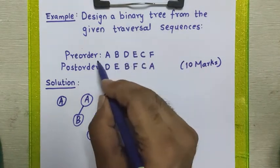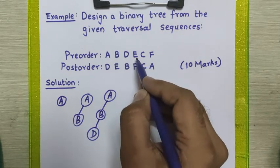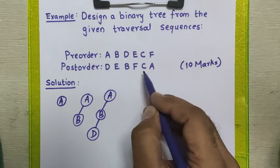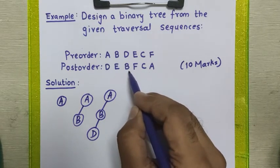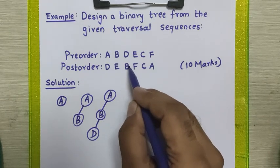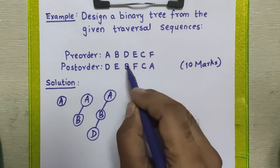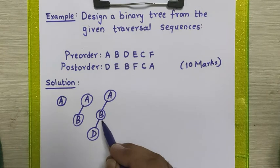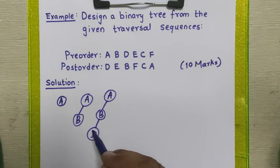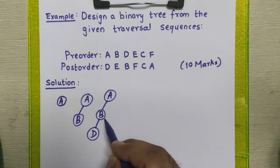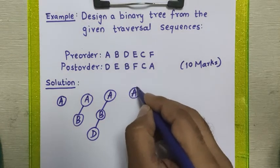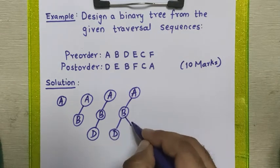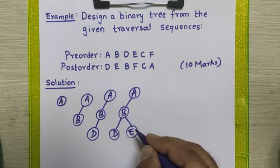Next, we pick node E from the pre-order sequence and check it in the post-order sequence. It appears before A and before B, meaning it is part of node B. It appears immediately before B, confirming it belongs to node B. Since node B's left side is already occupied by D, the coming element E must be placed to the right side of node B.